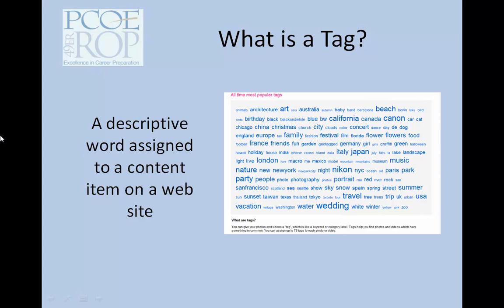Over time, some tags will be used more than others. Commonly used tags serve as links between items that would otherwise not be related, such as a group of blog posts about President Obama, or a group of pictures on Flickr of the Golden Gate Bridge.